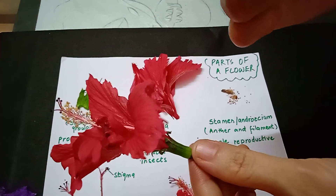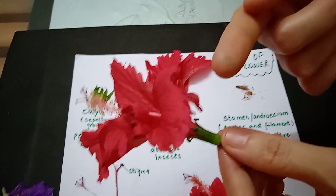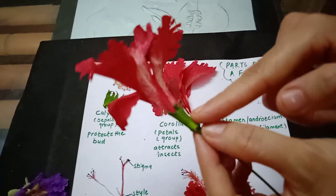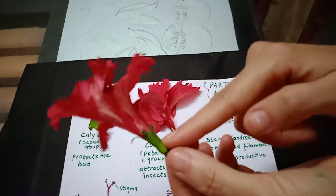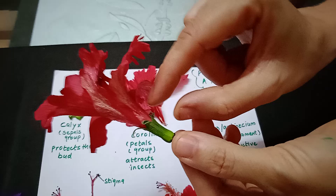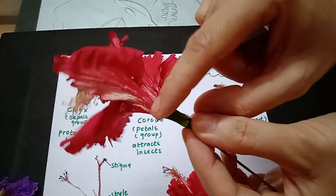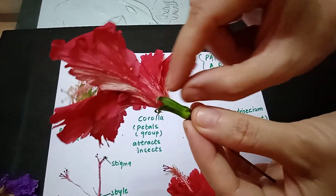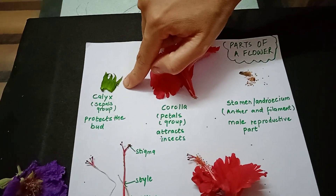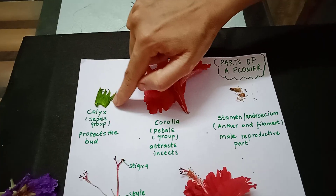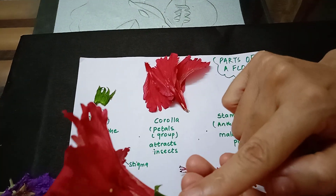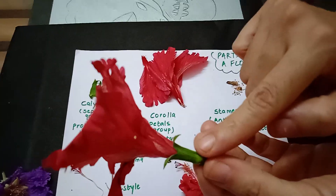The first whorl is the green portion of the flower. Individually, each part is called a sepal, and the group of sepals together is called the calyx. So this is the first whorl of your flower — calyx.